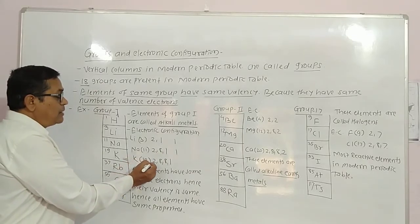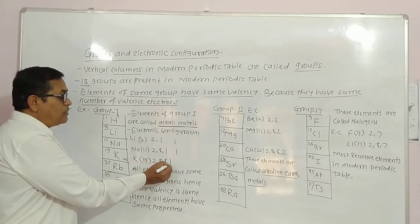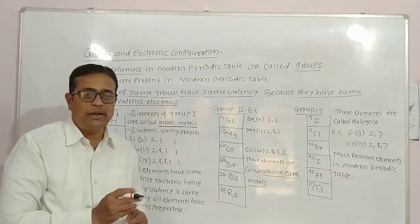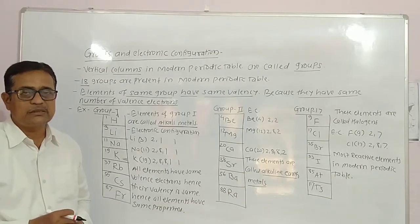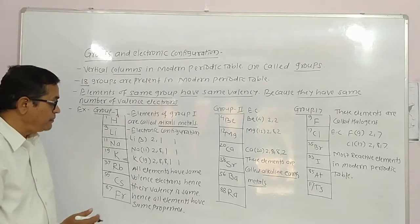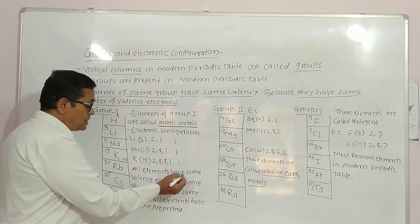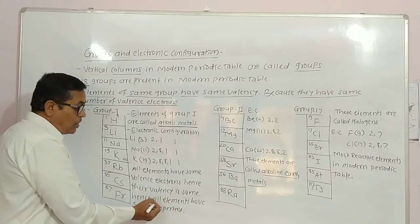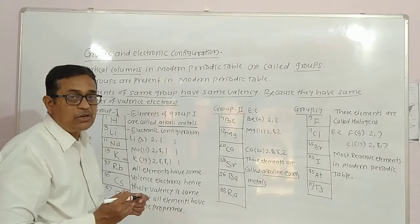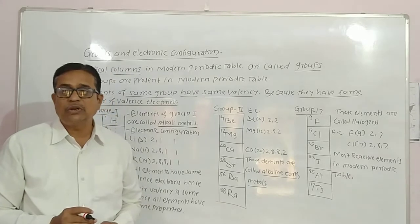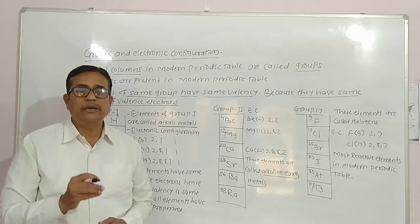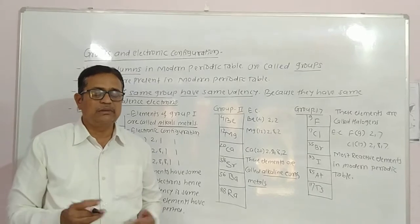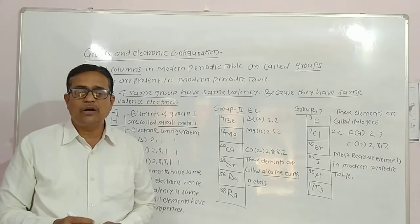Potassium, atomic number 19, electronic configuration 2, 8, 8, 1 — its valence is 1. All elements of Group 1 have the same valence of 1, hence their chemical properties are the same. This is because they have the same number of valence electrons, so their valency is the same.